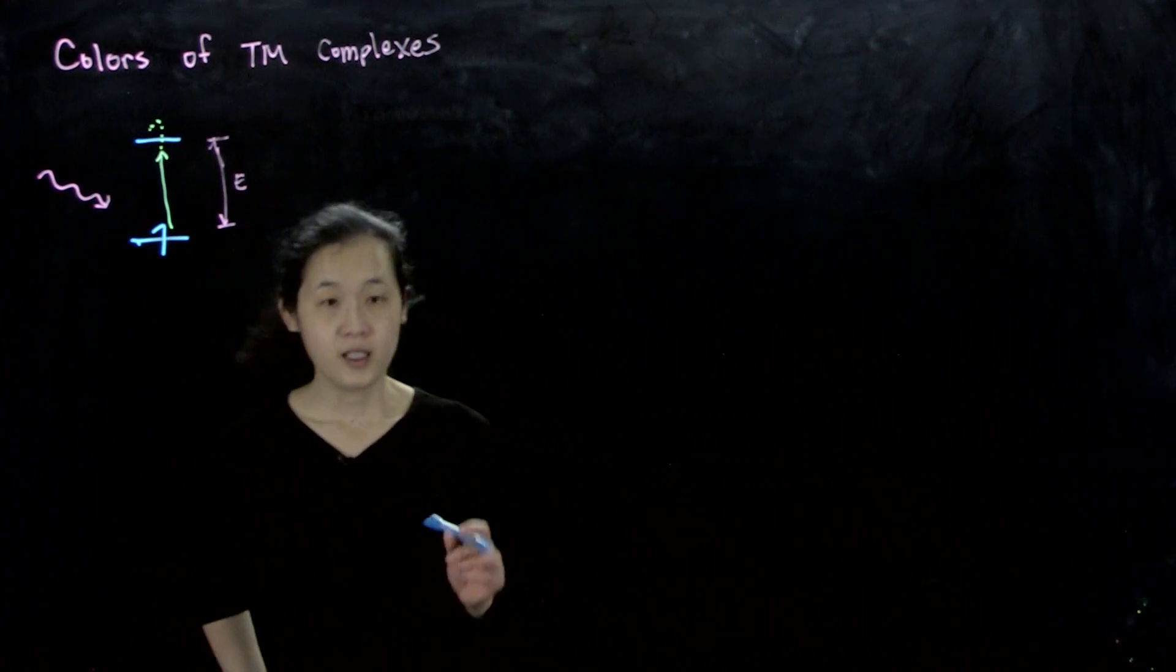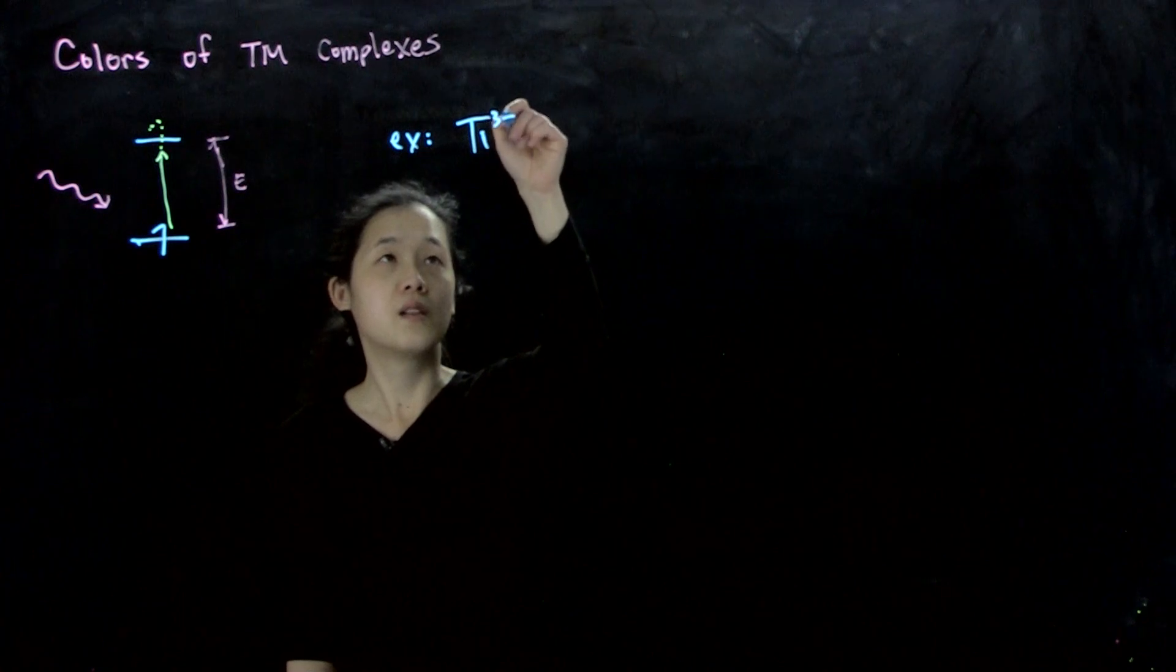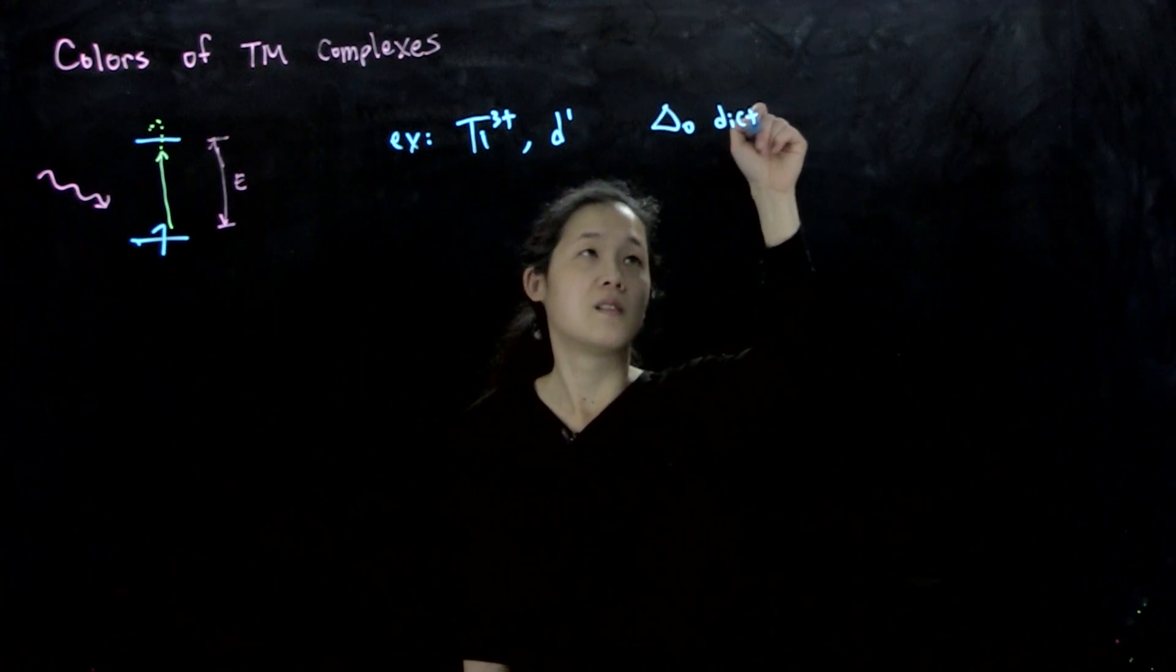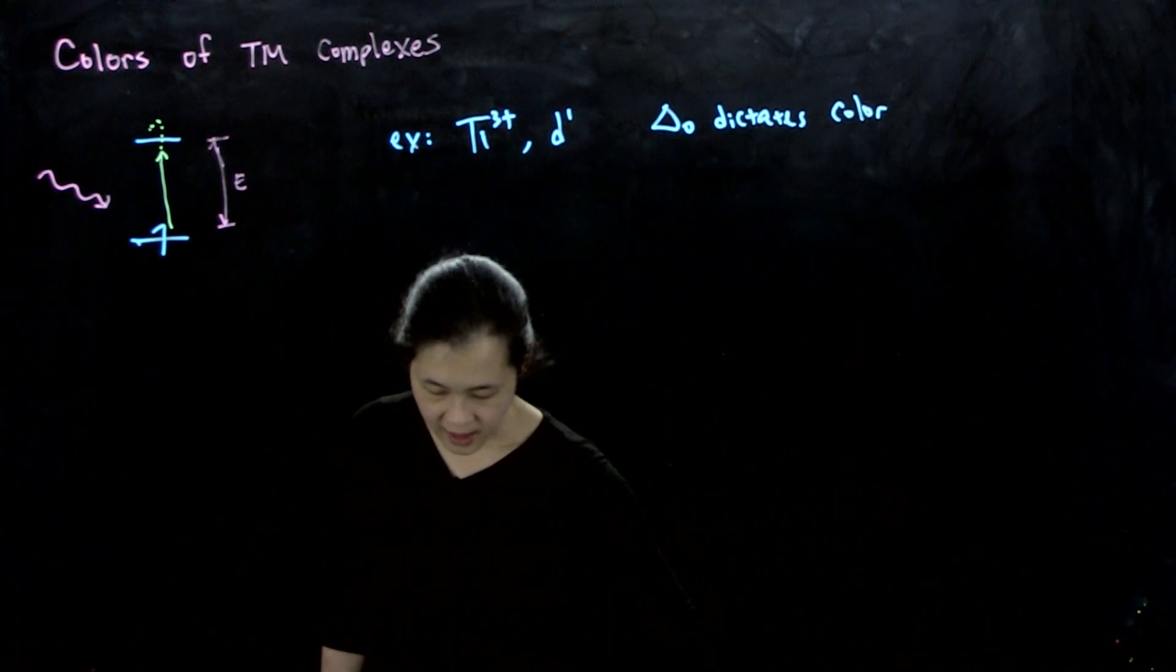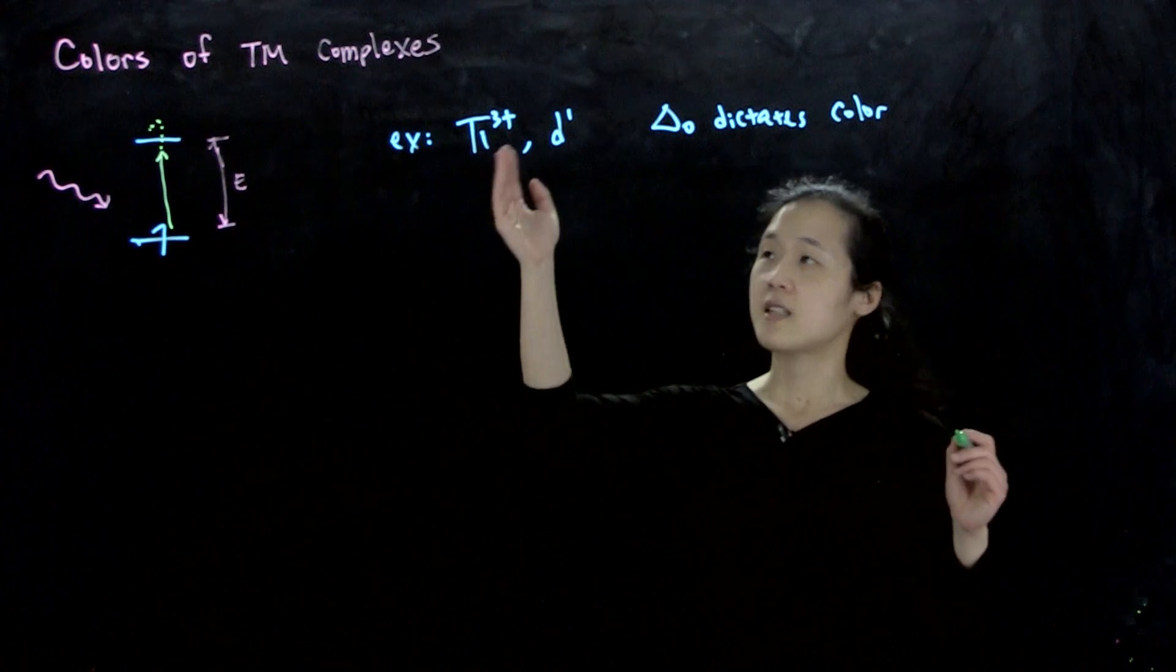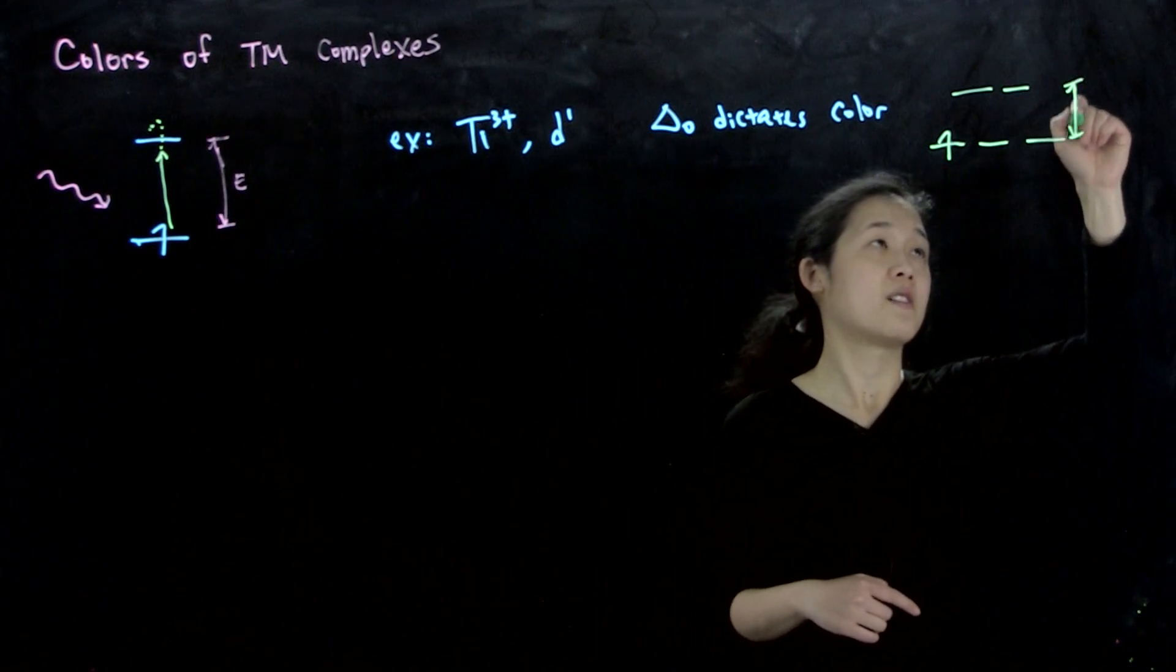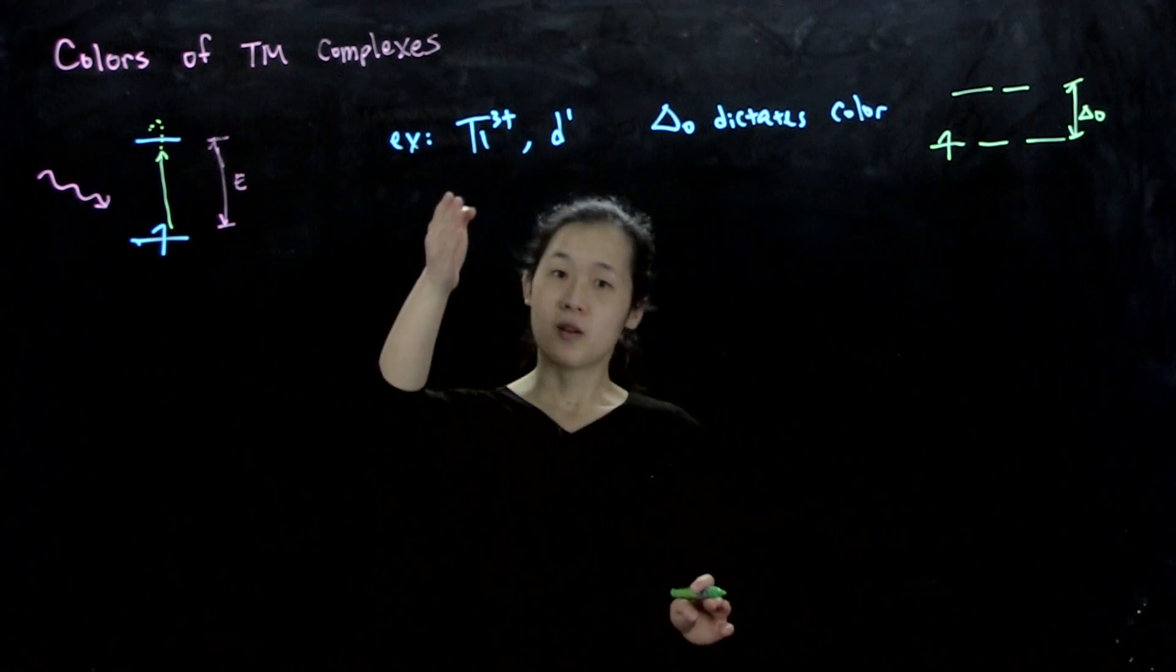For example, let's say titanium 3 plus compounds. These are all d1. Depending on what your delta O is, delta O dictates color. Any titanium 3 complex that's octahedral is going to have this configuration. But then depending on what ligands you have, you're going to have your different delta O. We're keeping all things in the same oxidation state, same metal, just changing ligands.